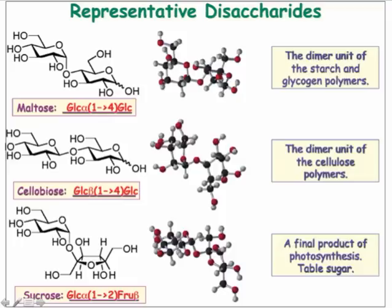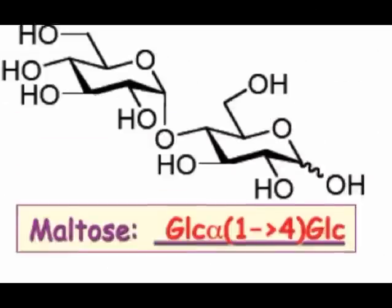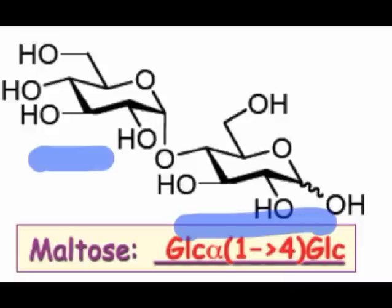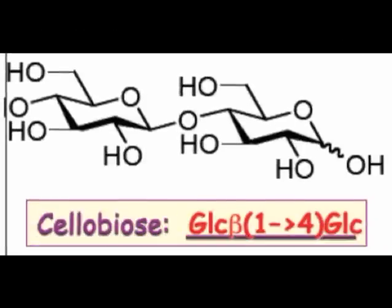Before diving into the chemistry behind structure elucidation of the disaccharides, I'd like to point out that disaccharides are an important class of carbohydrates that we see on a daily basis. Sucrose is just table sugar and is composed of glucose and fructose linked through their one and two positions, respectively. Maltose is another example of a sugar commonly found in food products and consists of two glucose molecules linked through their one and four positions. Cellobiose is the basic constituent of the structural polysaccharide cellulose, which is one of the most abundant organic materials on Earth.